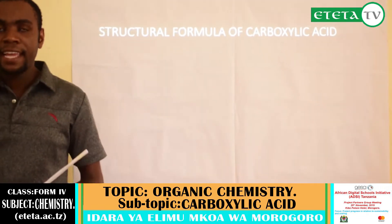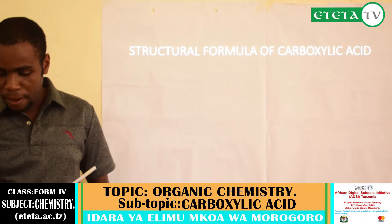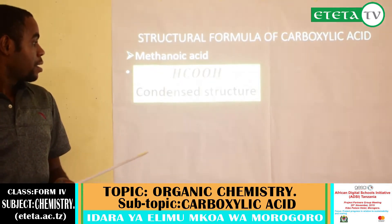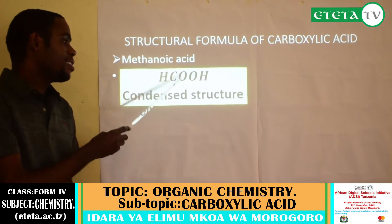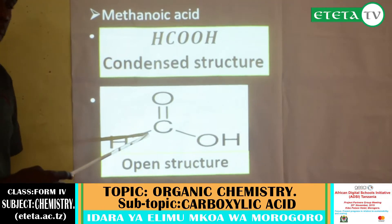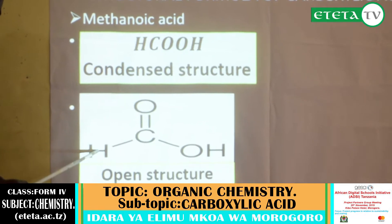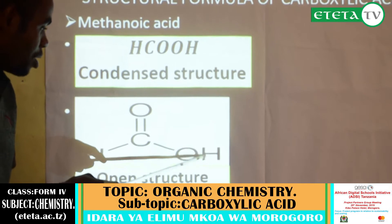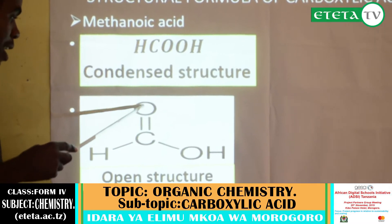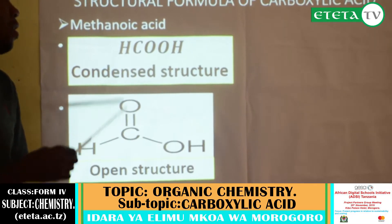Now, structural formula of carboxylic acid. In structural formula we have condensed structural formula and the open structural formula. Let us start with methanoic acid. The condensed structural formula for methanoic acid is HCOOH. The open structural formula shows carbon bonded with hydrogen, bonded with oxygen, that oxygen bonded with hydrogen, and carbon also double-bonded with oxygen. This is the open structural formula for methanoic acid.